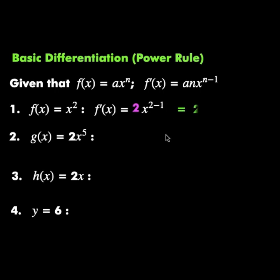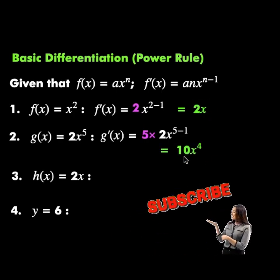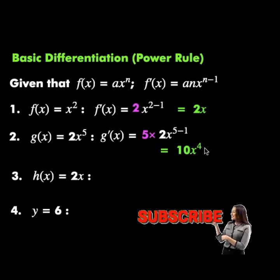Therefore the derivative is equal to 2x. Function g is equal to 2x raised to power 5. Therefore the derivative is equal to 5 times 2x raised to power 5 minus 1. Therefore the derivative is equal to 10x raised to power 4.